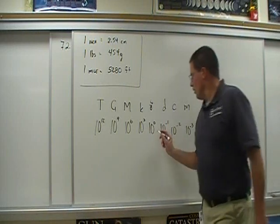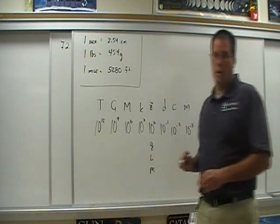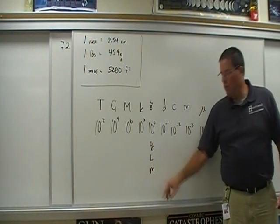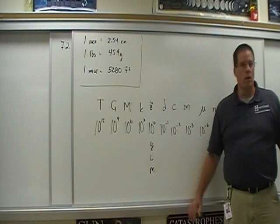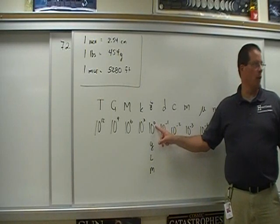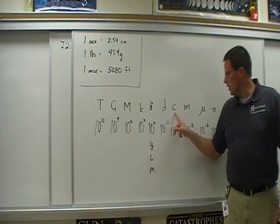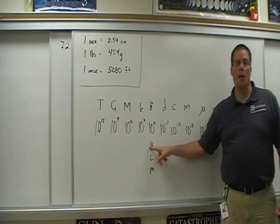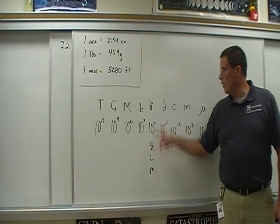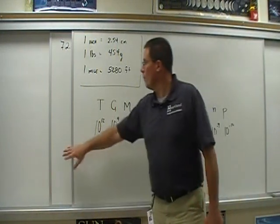So there are our prefixes and the values associated with them. Now, when I look at the units gram, liter, or meter — what prefix do each of these have as it stands? None. That's why it has ten to the zero. In other words, I don't have to move anywhere to go from, say, centigrams. If I do, then I move the decimal two times.